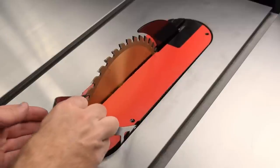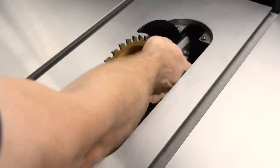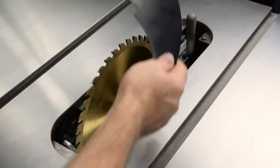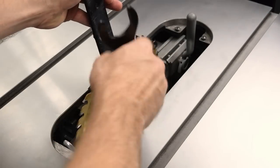Remove the table insert. Remove the riving knife or any guarding or dust collection equipment. Remove the blade.